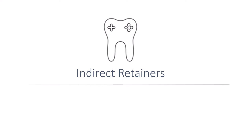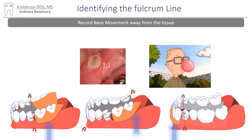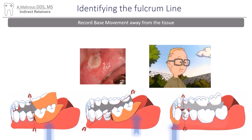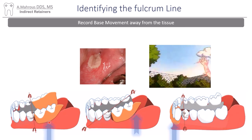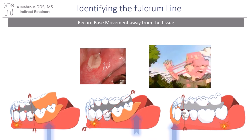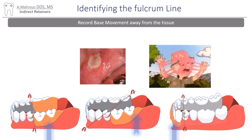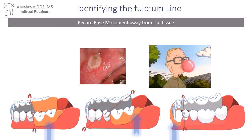Hello and welcome to another RPD video. Today we'll be discussing indirect retainers. Indirect retainers fix the problem that occurs whenever someone eats a sticky substance, resulting in the denture base lifting off of the tissues, causing rotation around the fulcrum line and the metal framework digging down into the soft tissues underneath, causing damage like this.